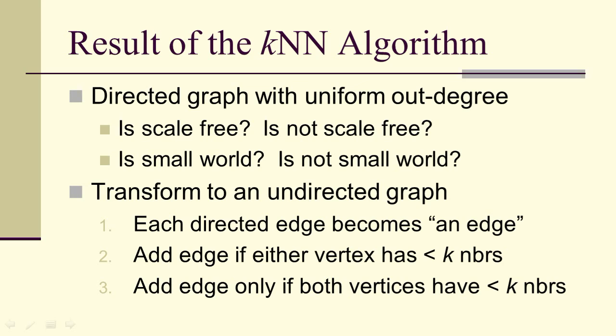There's three ways we could do this. We could take the directed graph and just say that each directed edge will automatically become an edge in an undirected graph. We could add an edge if either one has fewer than K neighbors. Or you could add the edge only if both vertices have fewer than K neighbors.